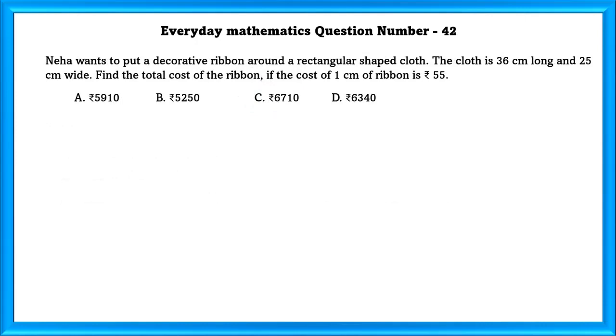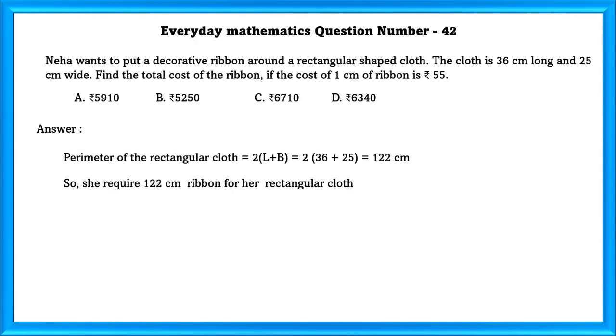Every day mathematics question number 42. Neha wants to put a decorative ribbon around a rectangular shaped cloth. The cloth is 36 cm long and 25 cm wide. Find the total cost of the ribbon. If the cost of 1 cm of ribbon is 55 rupees. Perimeter of the rectangular cloth is equal to 122 cm. So, she requires 122 cm ribbon for her rectangular cloth. Cost of 1 cm ribbon is equal to 55 rupees. Therefore, 122 cm of ribbon is equal to 6710.